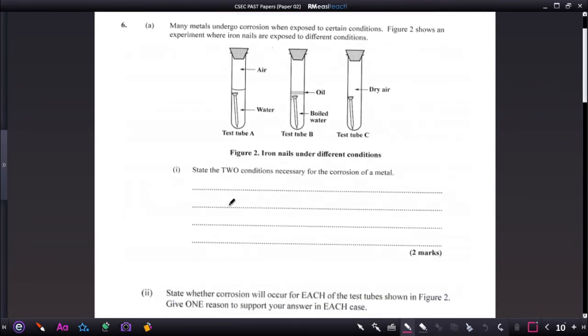State two conditions necessary for the corrosion of a metal. The first condition is the presence of air, which is oxygen in this case. And the next condition is the presence of moisture, which is water.